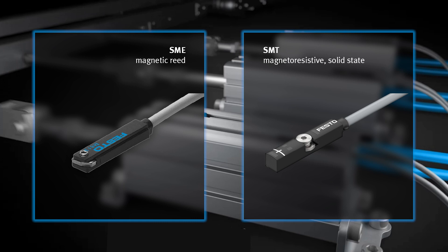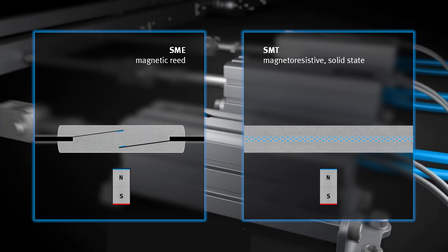They differ in the way they work. The SME is a magnetic reed sensor. The SMT is a magnetoresistive sensor, also called solid state.